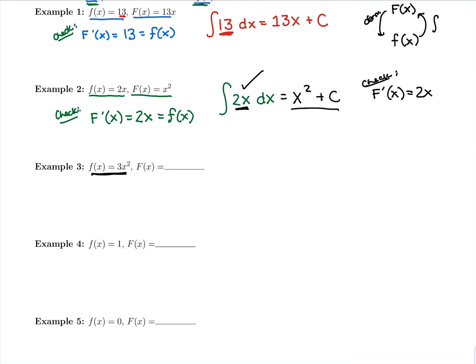So now we're looking at what has a derivative of 3x squared. We said what had a derivative of 13 must have been 13x. What had a derivative of 2x must have been x squared. And now we're thinking what had a derivative of 3x squared must have been x cubed plus c.